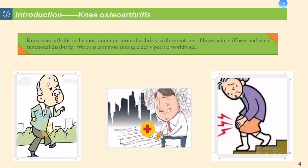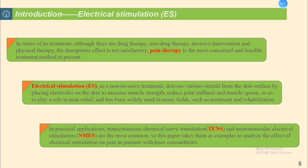Knee Osteoarthritis is the most common disease in Osteoarthritis. Its main symptoms are knee pain and knee stiffness, which makes it inconvenient for people to move, and can even lead to functional disability in severe cases. Globally, the majority of its patients are senior citizens.